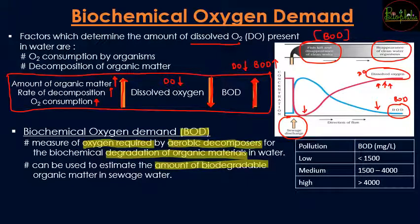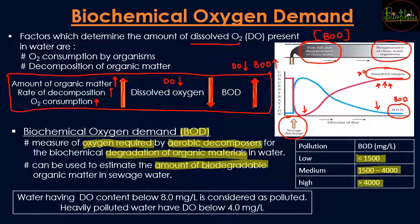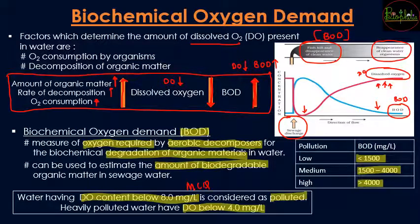According to BOD values measured in mg/L: less than 1500 mg/L is a low pollution area; 1500 to 4000 is medium; and more than 4000 is a high pollution red zone. An important point for MCQs: when dissolved oxygen content is below 8 mg/L, the water is considered polluted. When dissolved oxygen is below 4 mg/L, the water is heavily polluted.